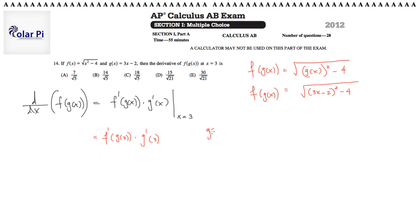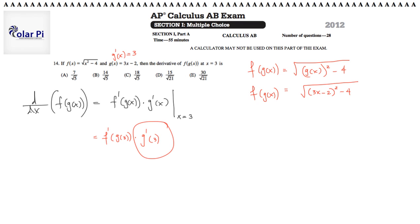Since g of x is equal to 3x minus 2, I'll write g prime right above it. The derivative of g of x is obviously just 3, so g prime of x equals 3. It's a constant, so for all values of x g prime is 3. Specifically at x equals 3, g prime of 3 is also 3. So I'll replace that with a 3.